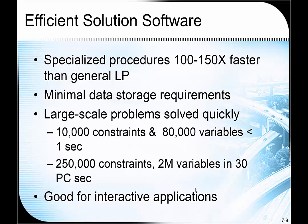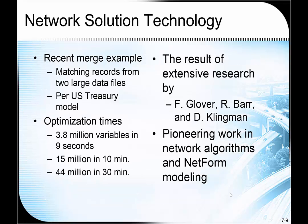These times are probably a bit old now, but here's a network with 10,000 constraints and 80,000 variables solved in less than a second. A quarter of a million constraints — each of those would be a node — and two million variables solved in 30 seconds on a decent PC. It would probably be much faster now. The fact that you can solve them quickly and without much memory makes it nice for interactive applications and large-scale problems as well.